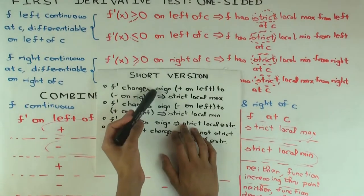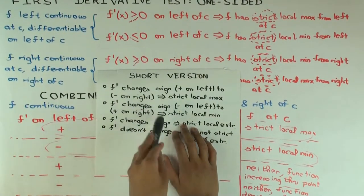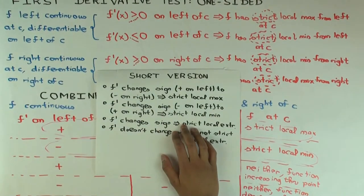Though if you are in these cases where f prime changes sign from the left to the right, it has to be a critical point. So it turns out the derivative has to be zero or doesn't exist, but that's not part of what we are given.